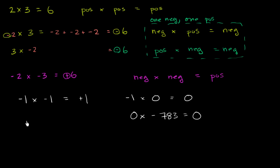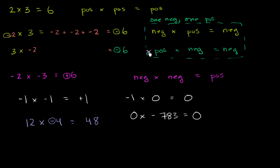What about 12 times negative 4? Well, 12 times positive 4 would be 48. And we're in the circumstance where exactly one of the two numbers is negative, so the product is going to be negative. You can imagine this as repeatedly adding negative 4 twelve times, and so you would get to negative 48.